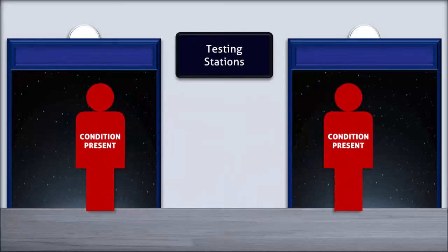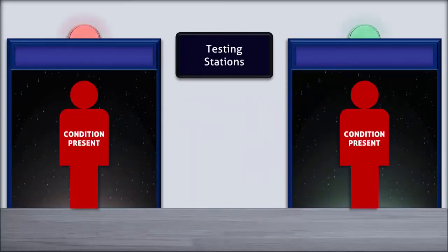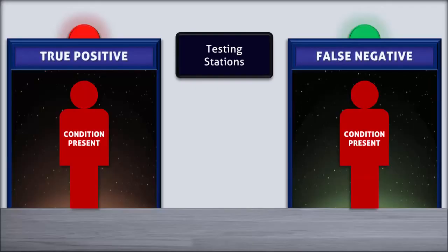Unfortunately, because no test has perfect sensitivity, not everyone with the condition will test positive for it. On the left, the patient tested positive and because he has the condition, the test is referred to as a true positive. And on the right, the patient tested negative, and because he actually does have the condition, the test is referred to as a false negative.